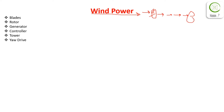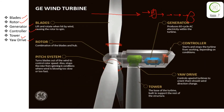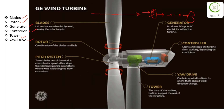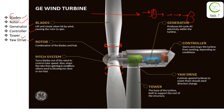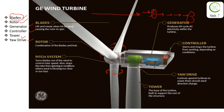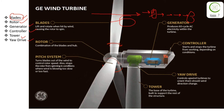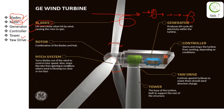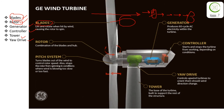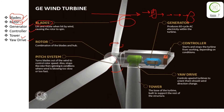The main components required during this whole operation are: blades, rotor, generator, controller, tower, and yaw drive. For their detailed analysis, we will use this animation. The first component is the blades — you can see them here. The second one is the rotor, which basically connects to the blades and rotates them when air strikes on them.